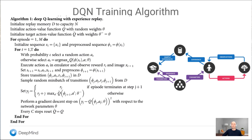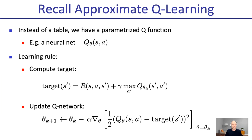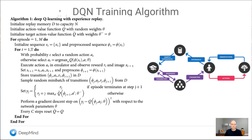This is the DQN algorithm from the DeepMind paper on learning to play Atari games — deep Q-learning with experience replay. We initialize a replay memory D, initialize Q-function with random weights theta, and initialize a target action-value network Q-hat with separate weights. By keeping two Q-functions slightly out of phase, we stabilize learning. The replay memory stores past experiences so they can be reused multiple times in Q-function updates rather than discarding each experience after one use.